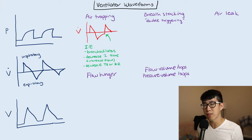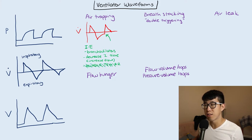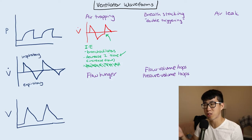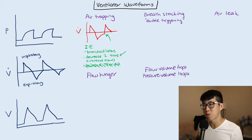Usually we kind of avoid doing this because in patients, this is going to affect their minute ventilation. So preferably we would rather just affect the I time by increasing flow or changing the I time parameter on pressure control, or giving some bronchodilators, rather than changing their tidal volume or respiratory rate.